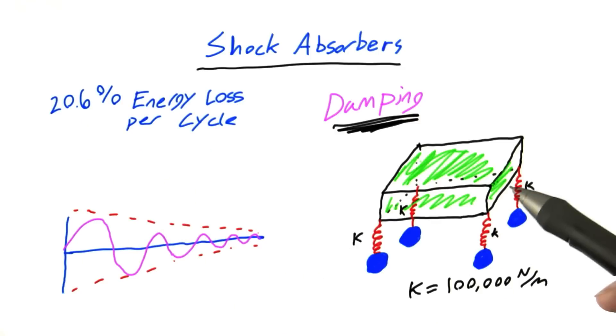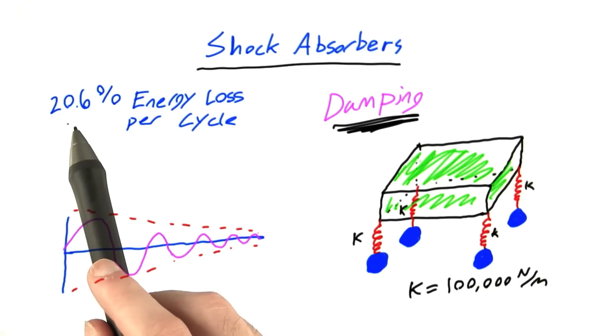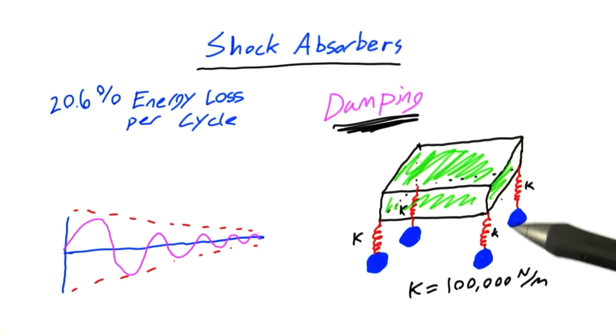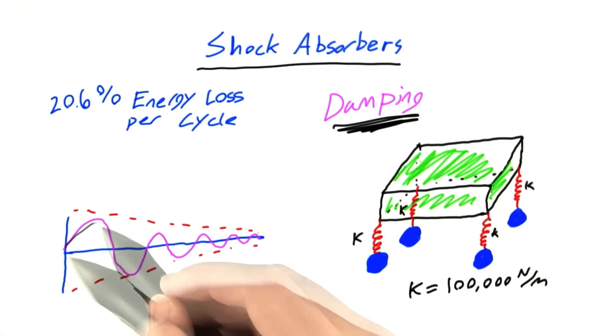Suppose that our car here is damped such that it loses 20.6% of its energy per cycle. That means that after a car hits, say, a bump, it'll oscillate with some initial energy, but after each cycle, a cycle being one pattern like this, it will lose 20.6% of its energy.